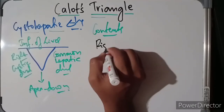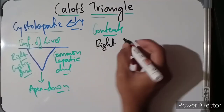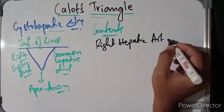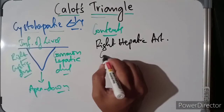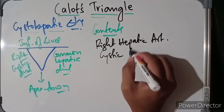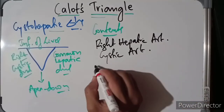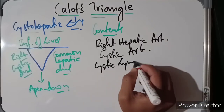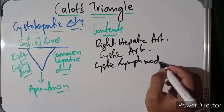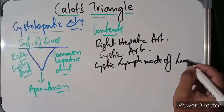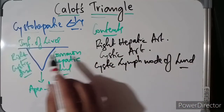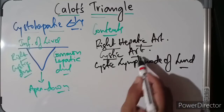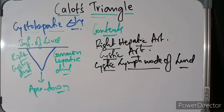The triangle contains the right hepatic artery, the cystic artery, and also the cystic lymph node of Lund.